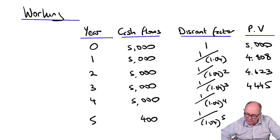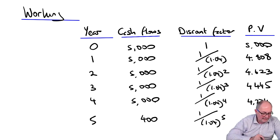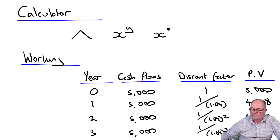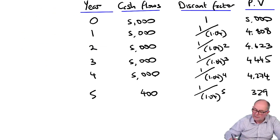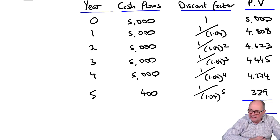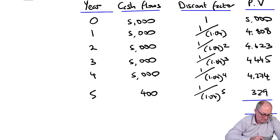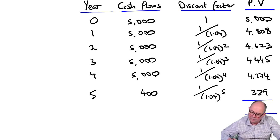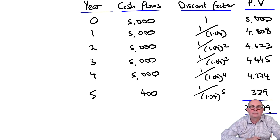End of year four, 4,274, and finally, the scrap proceeds, 329. Then we'll need to add that up to get the opening lease receivable. I've got 23,479.